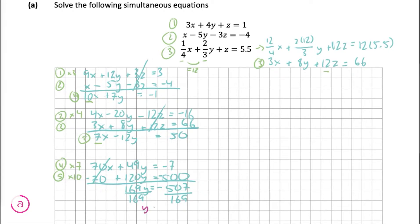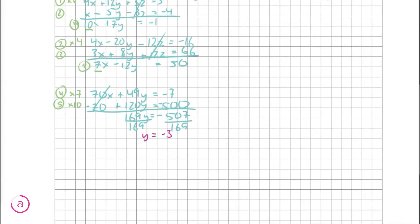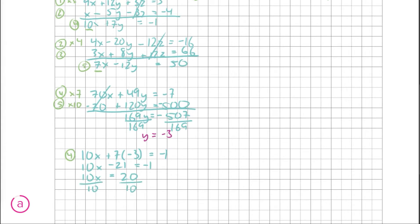We get the answer: y is equal to minus three. We have one of our answers, but we need the other two as well. So we choose equation four and substitute back in y equals minus three. We multiply it out, bring it across, divide everything by 10, and we get x is equal to two.